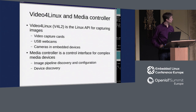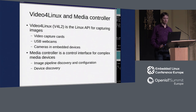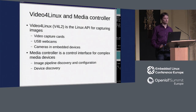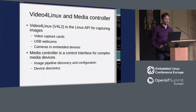A couple of words about the software interfaces used in Linux for user space. We have Video for Linux, which is the Linux API for capturing images. It supports video capture cards, USB webcams, and cameras in embedded systems. The API is the same, but the capabilities of the devices are very different. The Media Controller is a control interface for complex devices with an internal pipeline where a single V4L2 device node is not enough. It provides pipeline discovery, configuration, and device discovery.